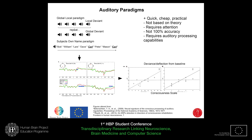We're also going to use auditory paradigms based on deviance — that is, sounds of tones or sounds of names. We measure the deviance in the EEG signal to these deviant stimuli, and you can measure the deflection from baseline and compare that across states. It shows quite good correspondence with whether the subject is actually conscious or unconscious.